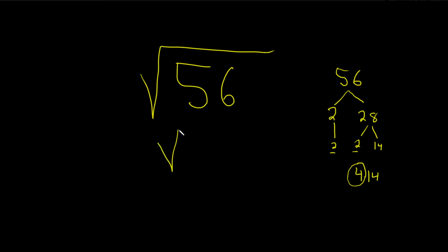So what you do is break up 56 into 4 times 14. And then you just take the square root of each piece. This is the square root of 4 times the square root of 14. And the square root of 4 is 2. So this is 2 square root of 14. I hope this video has been helpful.